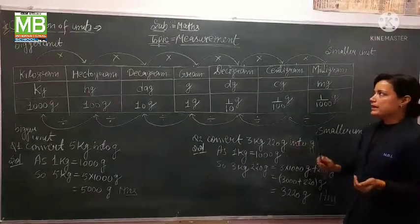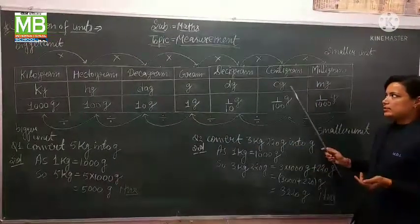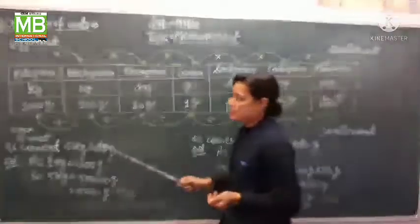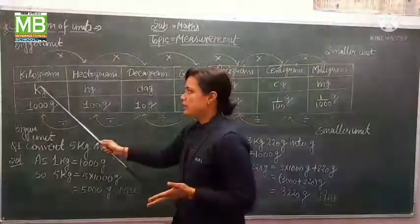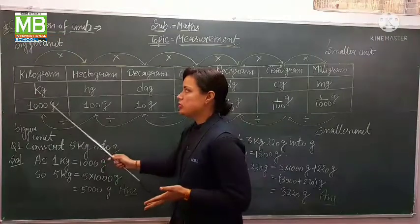decigram denoted by dg, centigram denoted by cg, and milligram denoted by mg. 1 kg is equal to 1000 g.